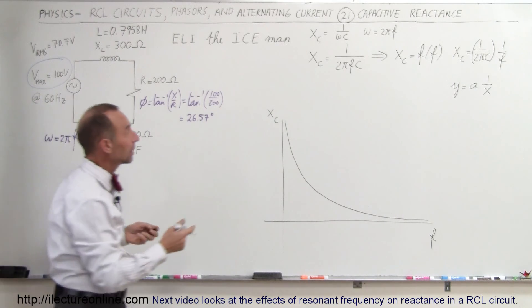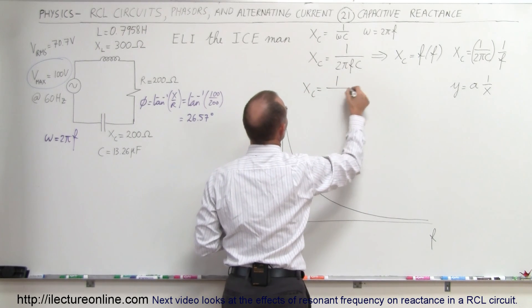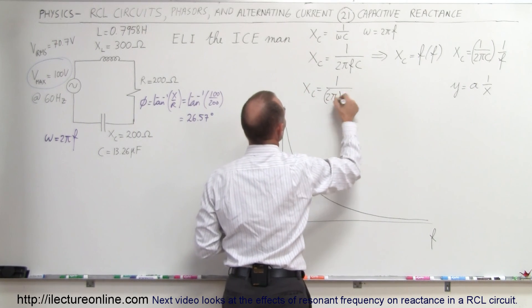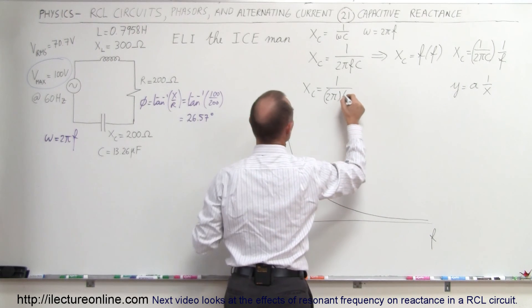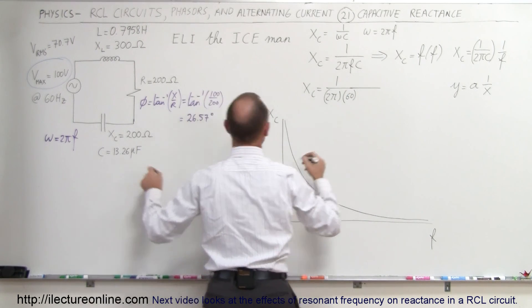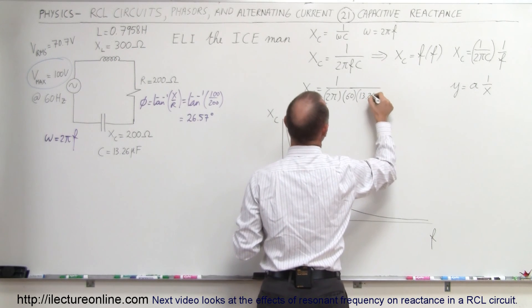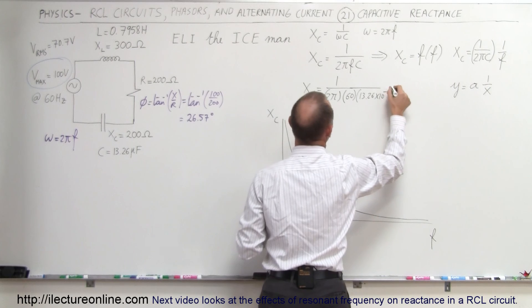Now in our particular case, we can calculate the capacitive reactance. X_C equals 1 divided by 2π times the frequency, which is 60 hertz, times the capacitance. In this case, it's 13.26 microfarads, or 13.26 × 10^-6 farads.